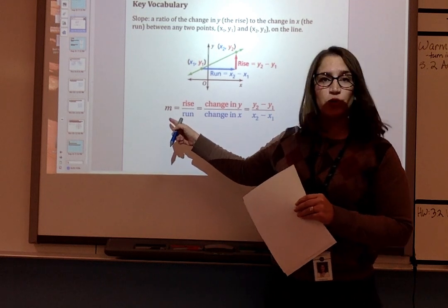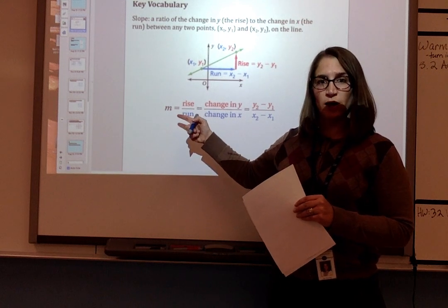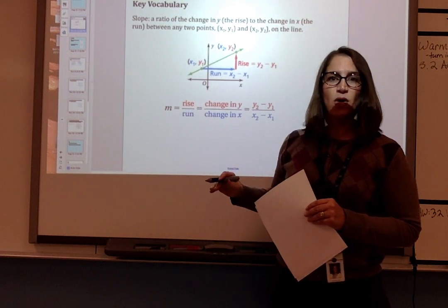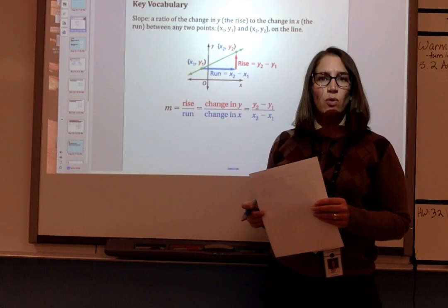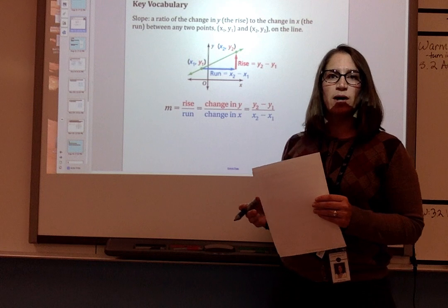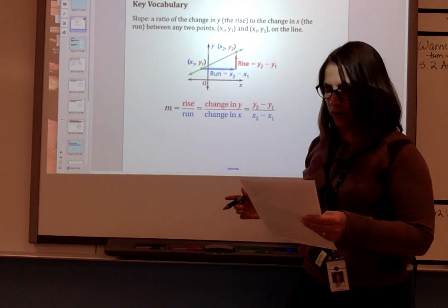So the slope, which we call m, can be written as the rise over the run, or the change in y over the change in x, or we can say it's y2 minus y1 over x2 minus x1.